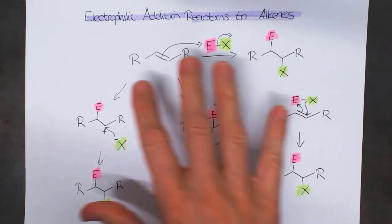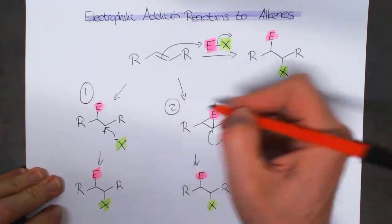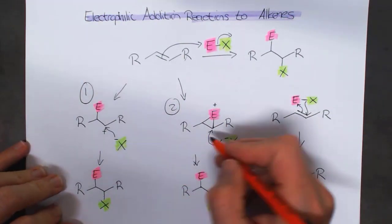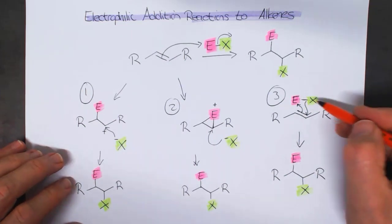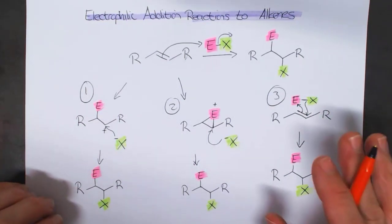All right, so we've got three different types of mechanisms. One, where we're forming a carbocation. Two, where we're forming a three-membered ring and then opening up of that. And the third one is where they're adding on the same side, or they're adding together at the same time.